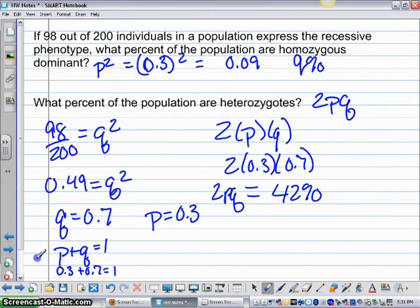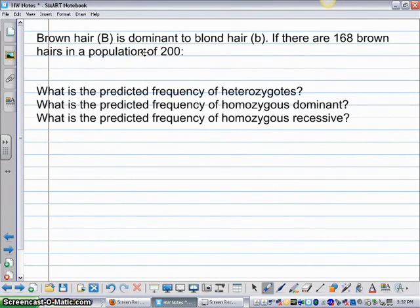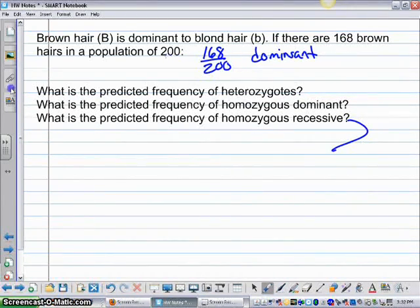So let's do two more practice problems. The first one, brown hair is dominant to blonde hair. If there are 168 brown out of a population of 200, that's the dominant frequency. And it wants to know what's the predicted frequency of heterozygotes, what's the predicted frequency of homozygous dominant, and what's the predicted frequency of homozygous recessive. So the first thing we need to do is the recessive. So if 168 are dominant, that means 200 minus 168 equals 32. 32 are going to be blonde, and that's what we want to start with.